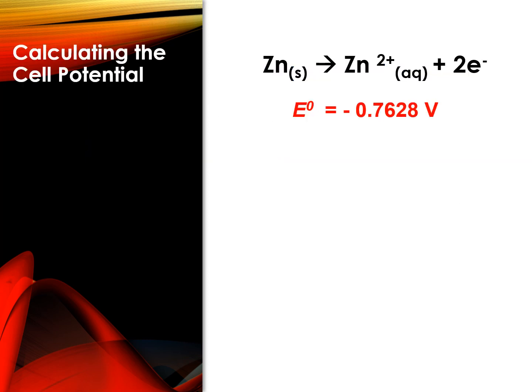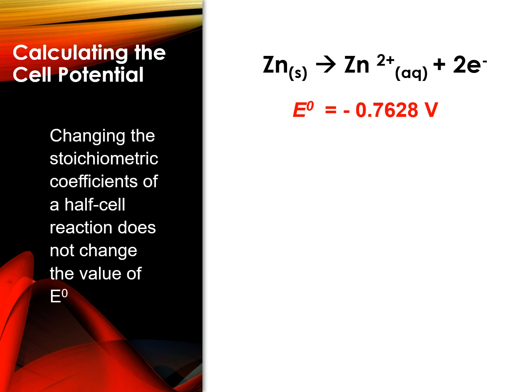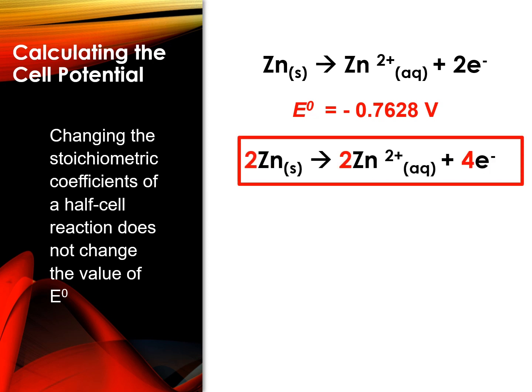FYI, changing the stoichiometric coefficients of a half cell reaction does not change the value of the cell potential. The reason for this is because the value of the cell potential is an intensive property. So, if I multiply the reaction with 2, the stoichiometric coefficients in the half cell reaction becomes 2Zn into 2Zn2+ plus 4e-.